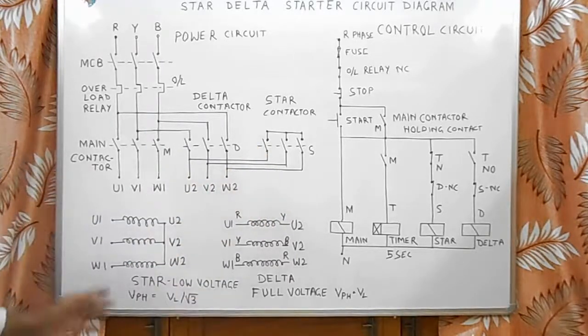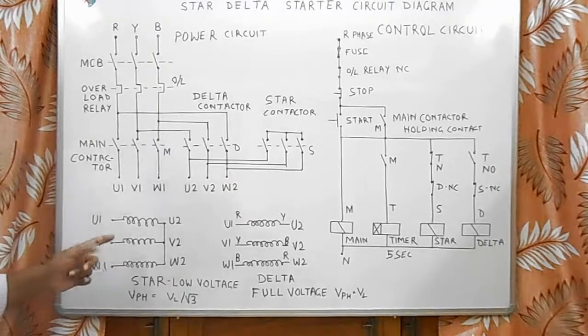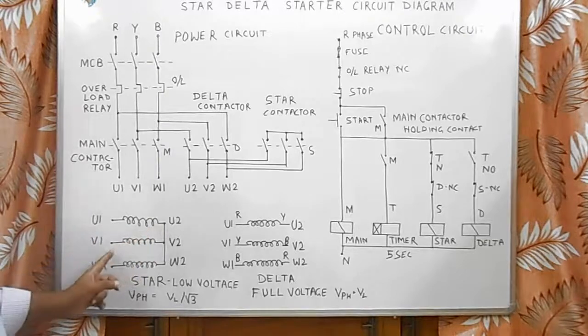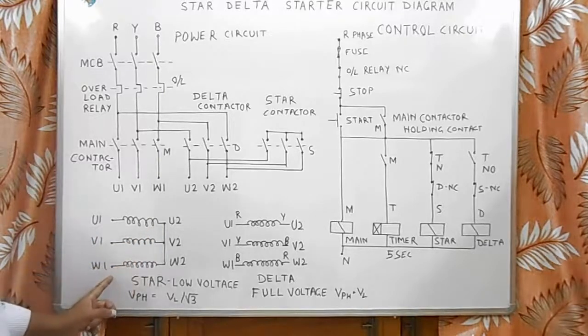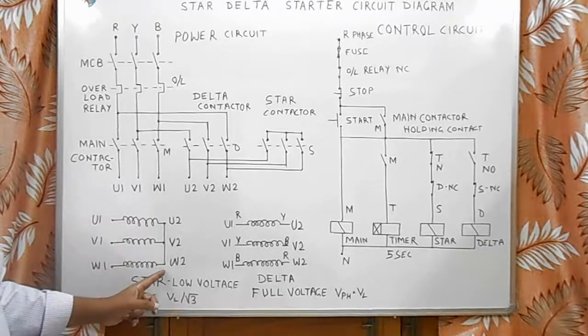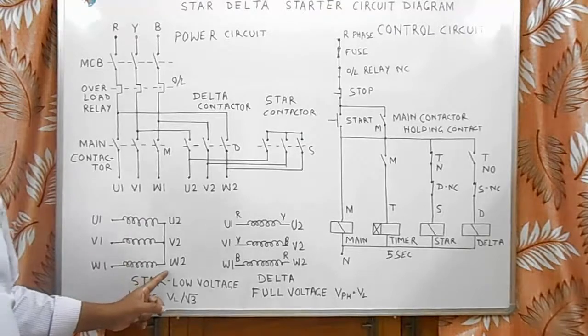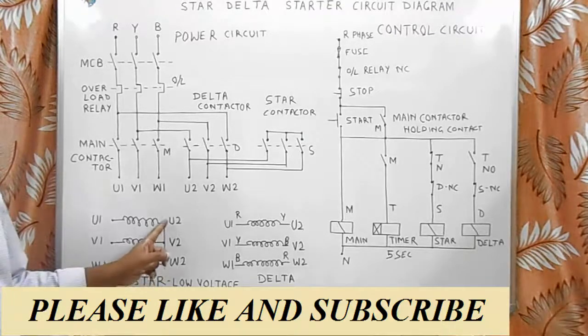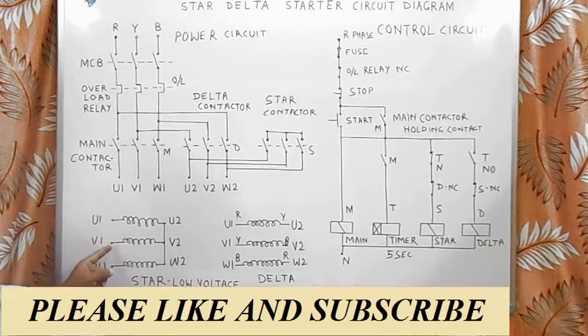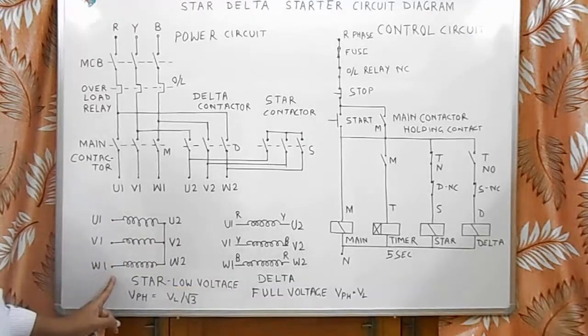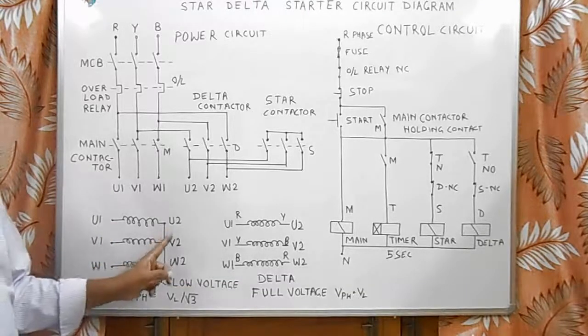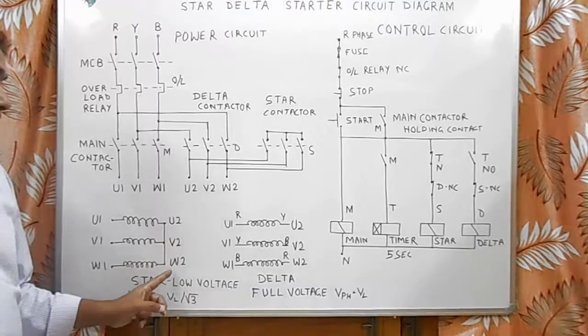When any three-phase motor has three windings, these windings are named as U1-U2, V1-V2, W1-W2. When we want to start at low voltage, we connect these windings into star connection. U1, V1, and W1 are given supply and U2, V2, W2 are short-circuited.